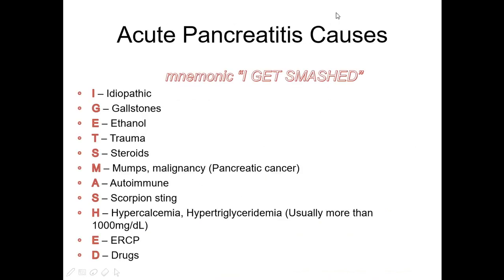What are the causes of acute pancreatitis? Remember the mnemonic 'I GET SMASHED': I - Idiopathic, G - Gallstone, E - Ethanol, T - Trauma, S - Steroids, M - Mumps and malignancy, A - Autoimmune, S - Scorpion sting, H - Hypercalcemia, E - ERCP, D - Drugs. Remember the mnemonic I GET SMASHED for the causes of acute pancreatitis.